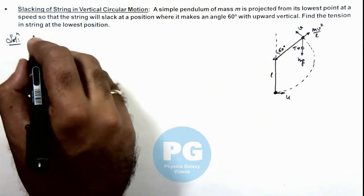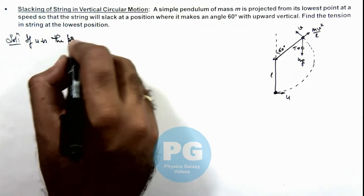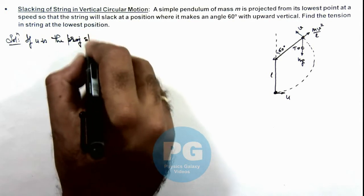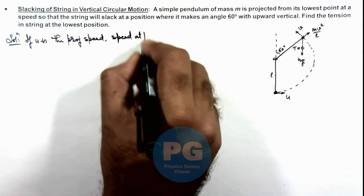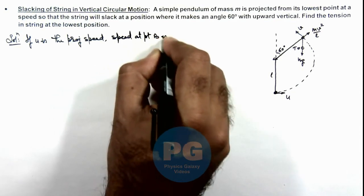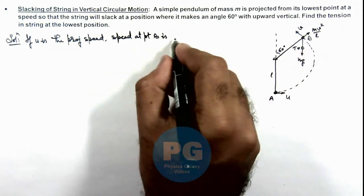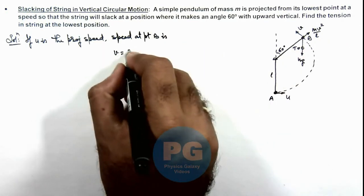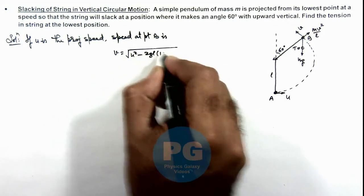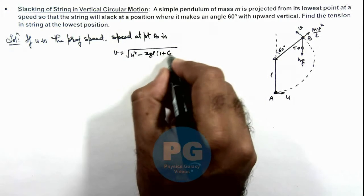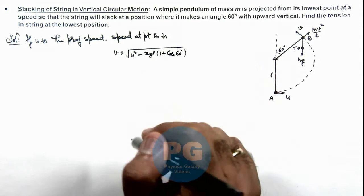So here we can write, if u is the projection speed, the speed at point B is—here we can consider initial point is A and this point is B. So this speed can be given as v is equal to root of u square minus 1 plus 60 degrees. That is the way how we have studied to calculate this speed in concept videos.